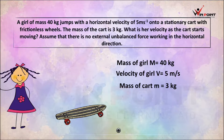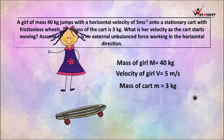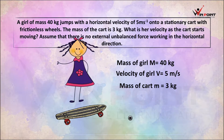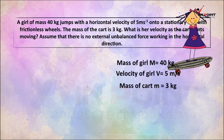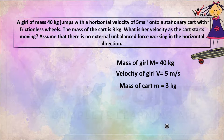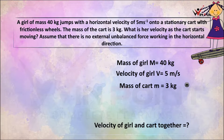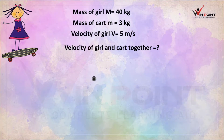Here we need to apply the law of conservation of momentum. It states that total momentum before interaction equals total momentum after interaction. The girl jumps onto the cart with a velocity of 5 m/s; after the interaction they move together. We need to find the total momentum before and after interaction.